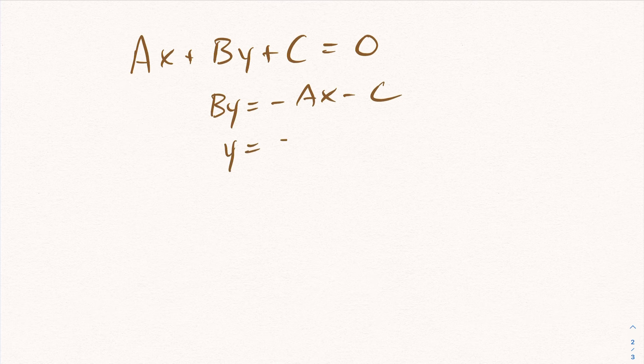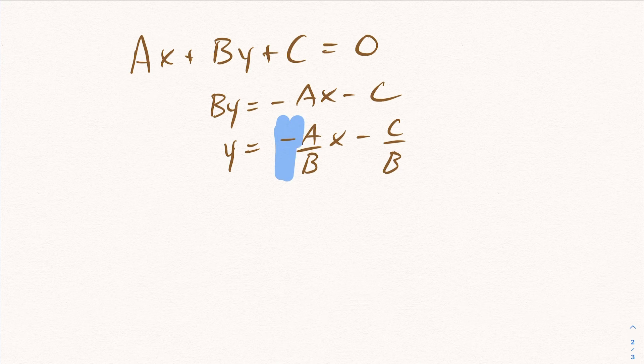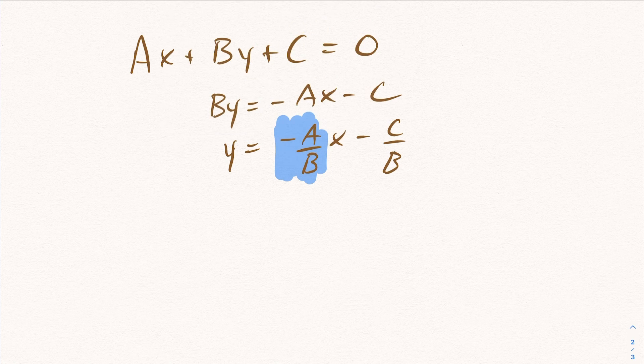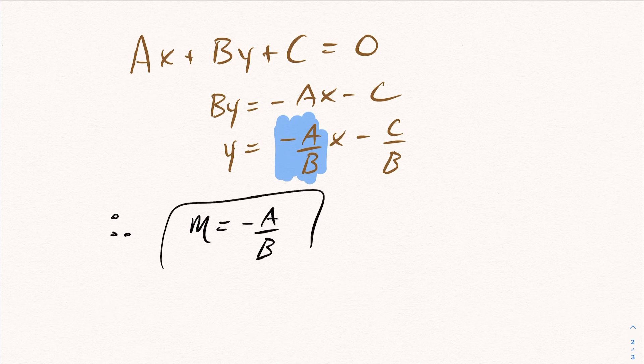y equals negative A over Bx minus C over B. So because of that, your slope here is always going to be... Therefore, the slope of this line is negative A over B. So that means if you have an equation in standard form.